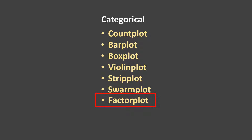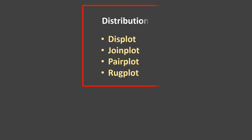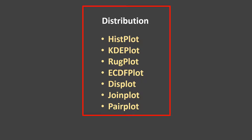With this factor plot, which is nothing but a cat plot, we are done with categorical plots. Now we will start with distribution plots. I have been showing you that we will learn four plots, but as a bonus I'm going to increase this list and we would learn now seven plots, starting with hist plot.